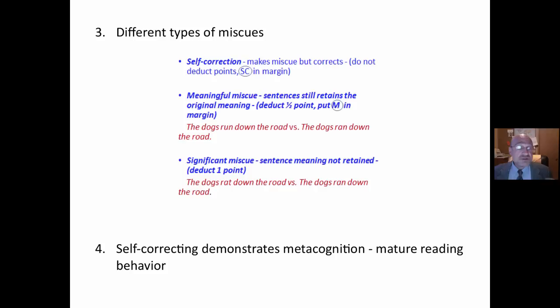There are different types of miscues. First of all, there's a self-correction. This is when students make a miscue but then correct. I do not deduct points for this, and there are many different ways of analyzing and scoring miscues, but that represents mature reading behavior. That is metacognition. The student realizes, oh, that doesn't make sense, and goes back and corrects it.